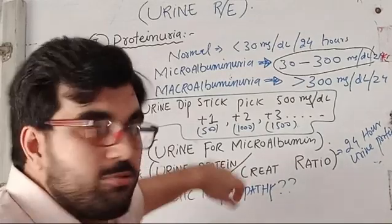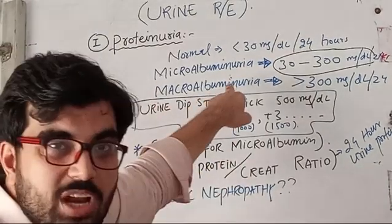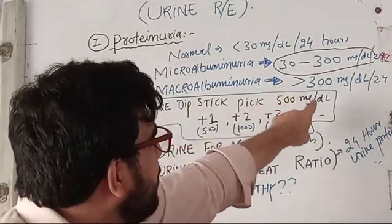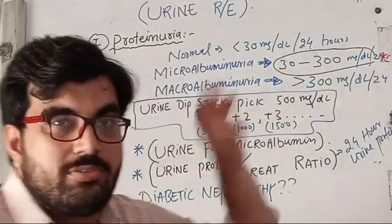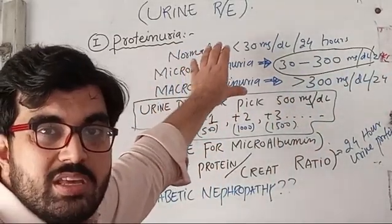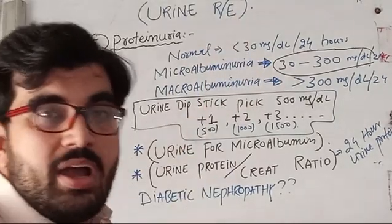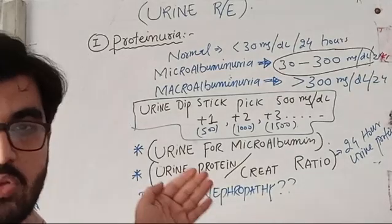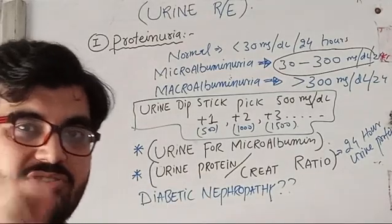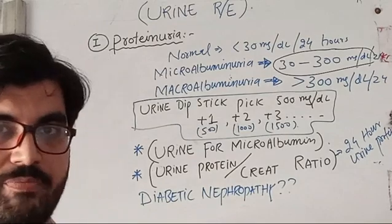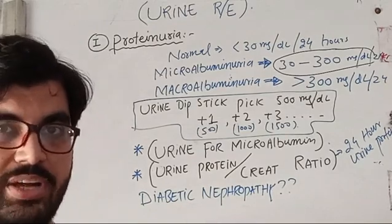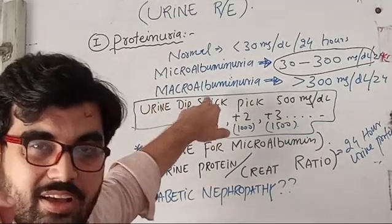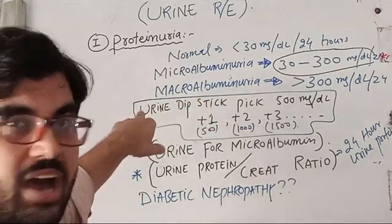Macroalbuminuria is when the protein in the urine is more than 300 mg per deciliter per 24 hours. This is very important because many patients we see in our ward end up with renal failure. By adding a simple medication for hypertension in diabetic patients, you can prevent kidney disease. The urine dipstick used for URE can pick up a minimum amount of protein of 500 mg per deciliter.